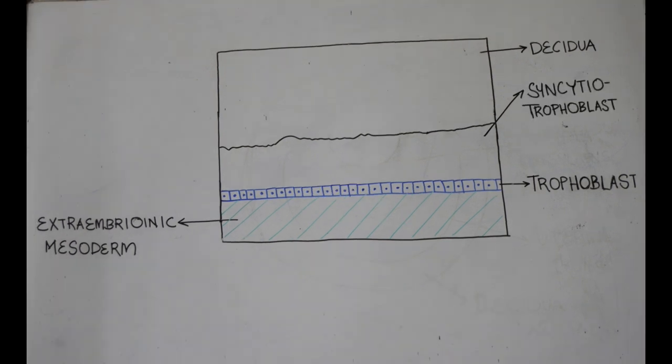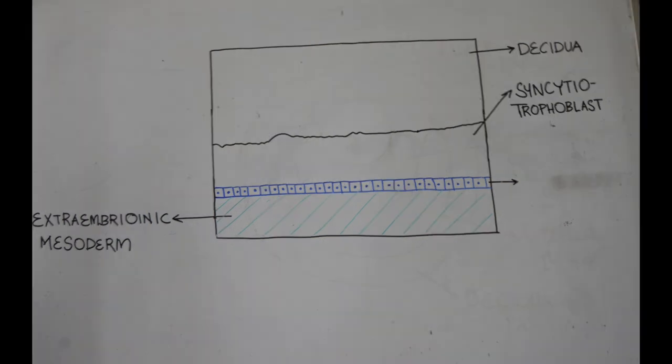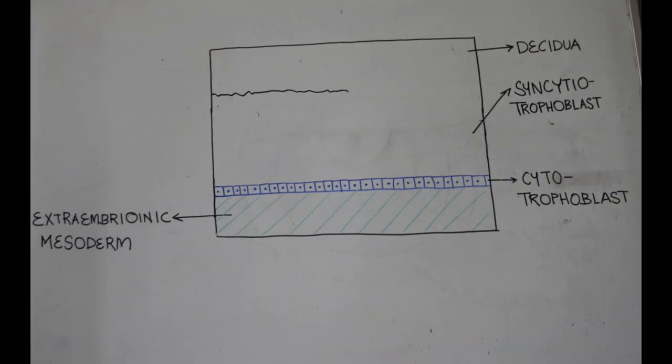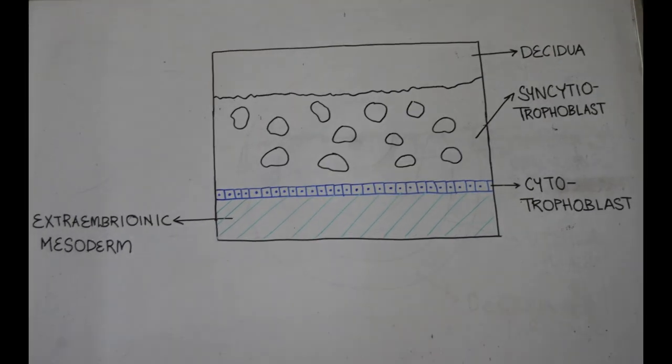Deep to the syncytium, the cells of the trophoblast retain their cell walls and form a second layer called cytotrophoblast. The cytotrophoblast rests on the extraembrionic mesoderm. The syncytiotrophoblast grows rapidly and becomes thick. Small cavities appear in this layer called lacunae.